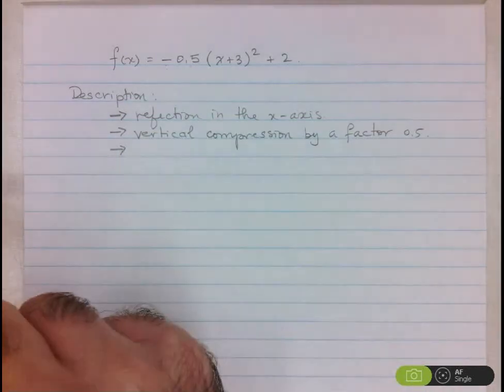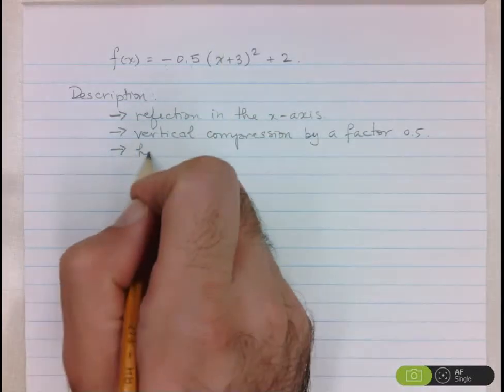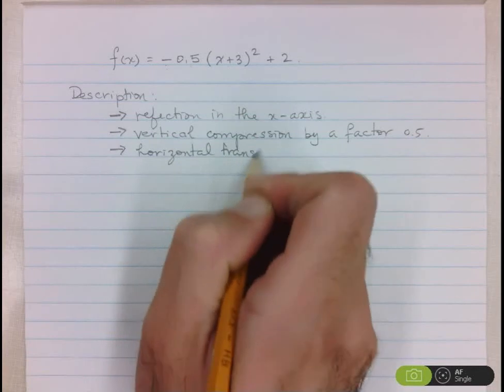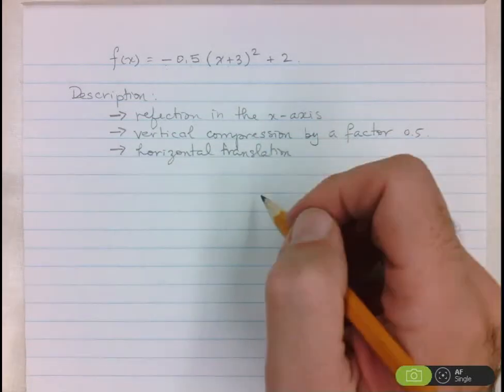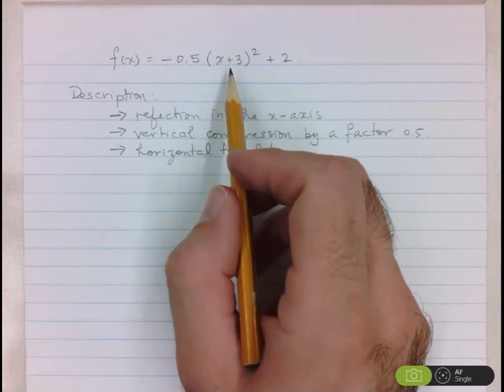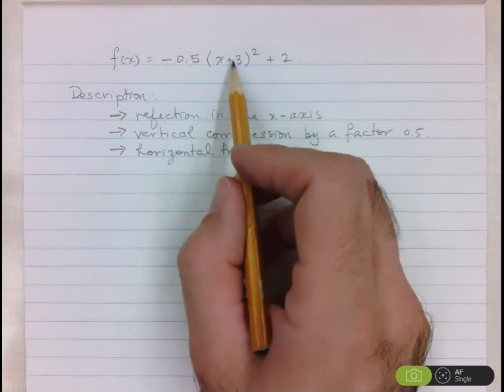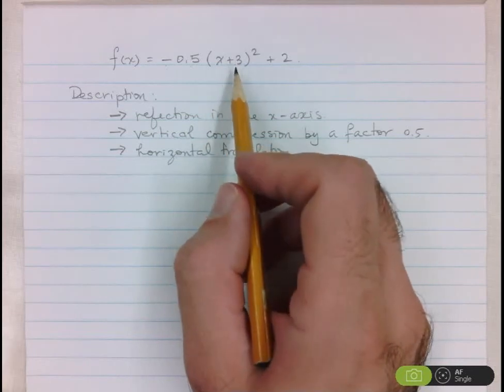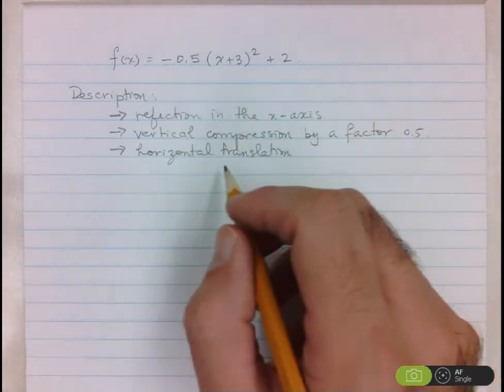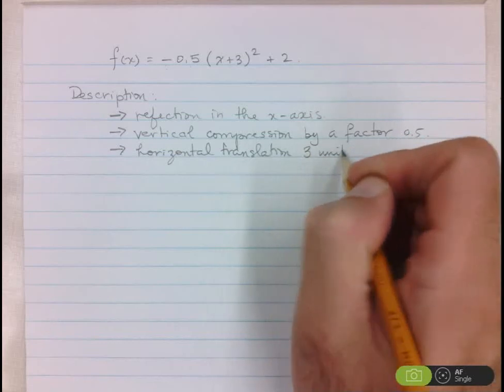Let's take care of the additions and subtractions. So we can start with the horizontal translation. And we remember that horizontal transformations always act in the opposite way. So here if we see x plus 3, it's actually going to be subtracting 3 from the x's. So everything is going to shift to the left. So it's a horizontal translation 3 units to the left.